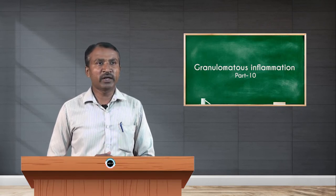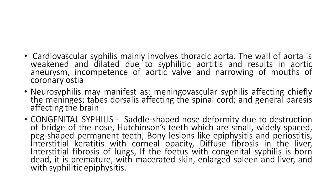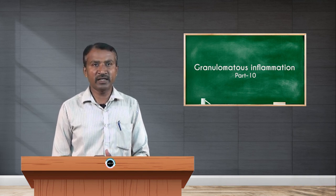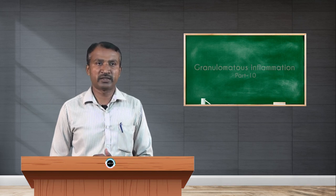Cardiovascular syphilis mainly involves the thoracic aorta; the wall of the aorta is weakened and dilated due to syphilitic aortitis. Neurosyphilis may manifest as meningovascular syphilis. In congenital syphilis, features include saddle-shaped nose deformity due to destruction of the bridge of the nose, Hutchinson's teeth — which are small, widely spaced, peg-shaped permanent teeth — and bony lesions like epiphysitis and periostitis. Thank you.